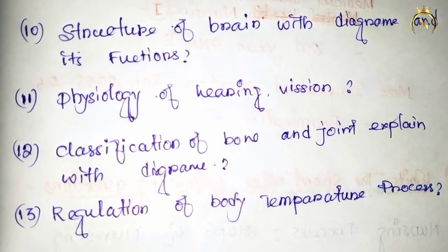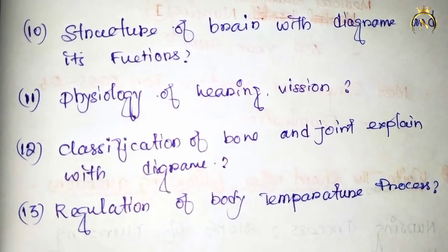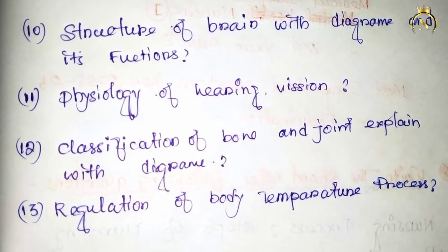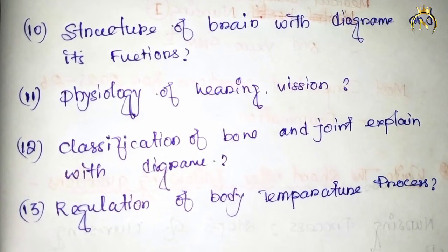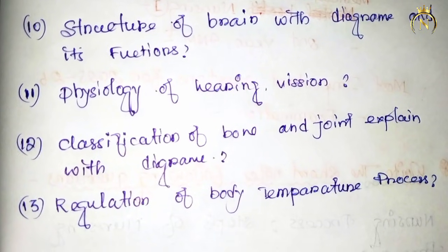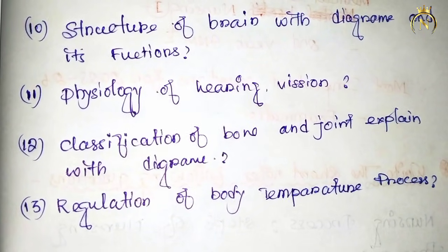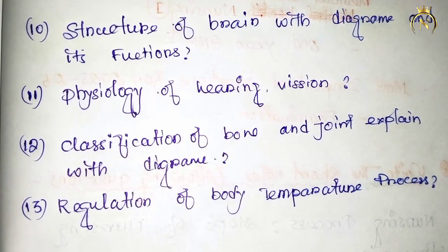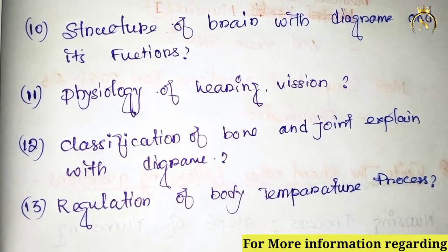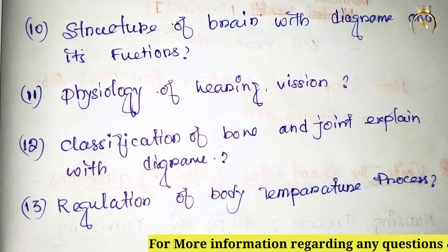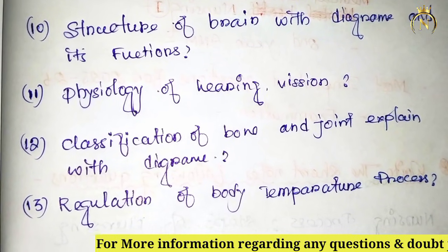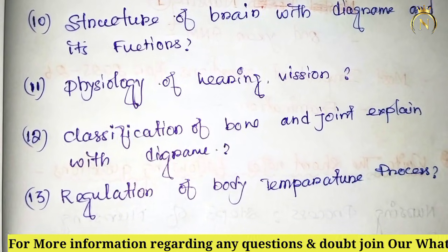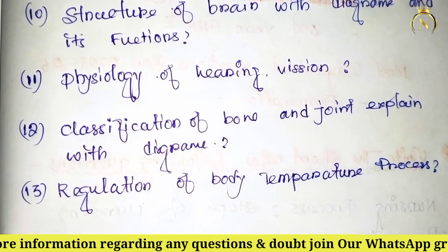Many questions will definitely ask about hearing and vision, or specifically ear structure or eye structure. These two are the same topic — physiology of hearing and vision. Also: classification of bones — try and explain with diagram. This is also most important.